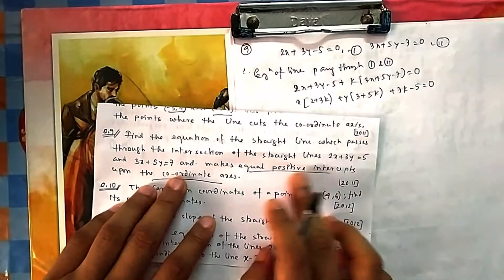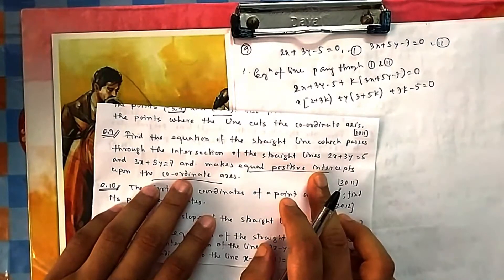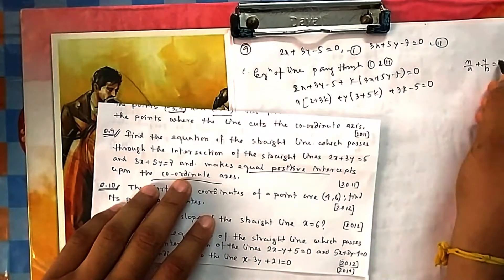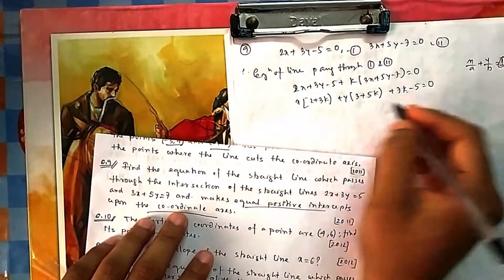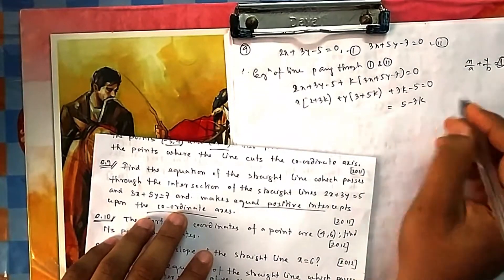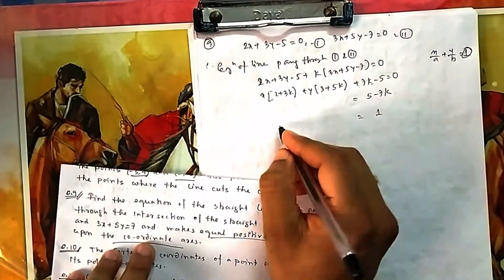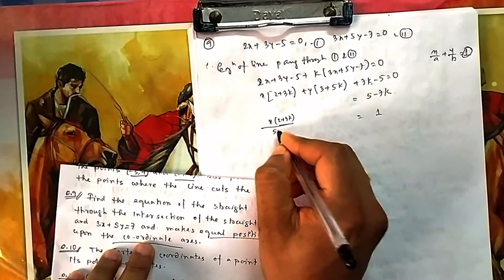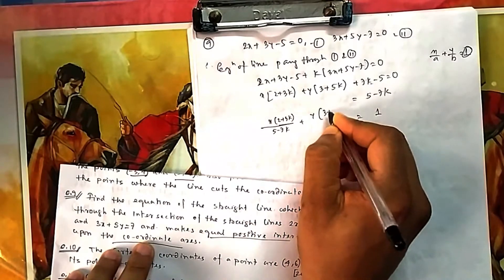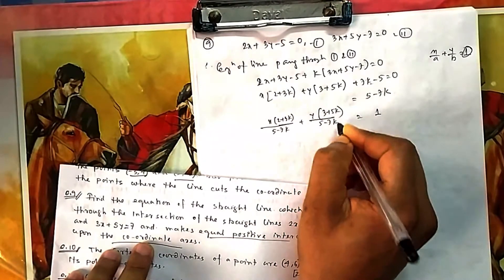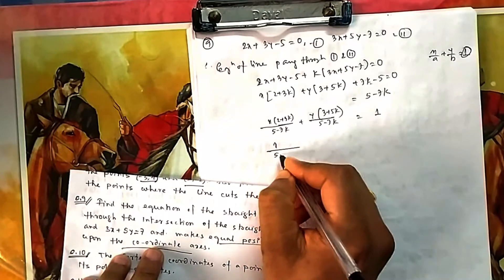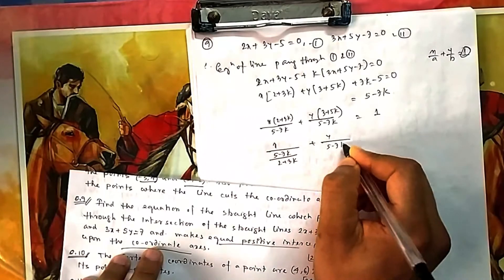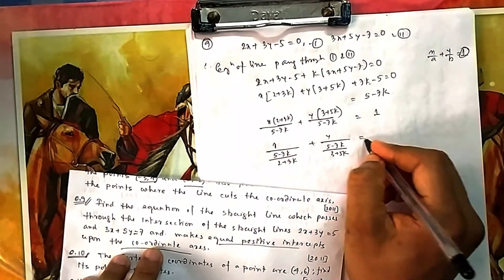Since we need equal positive intercepts, we convert to intercept form: x/a plus y/b equals 1. Taking the constant to the right side and dividing through by (5 minus 7k), we get x divided by [(5 minus 7k)/(2 plus 3k)] plus y divided by [(5 minus 7k)/(3 plus 5k)] equals 1. So the x-intercept is (5 minus 7k)/(2 plus 3k) and the y-intercept is (5 minus 7k)/(3 plus 5k).